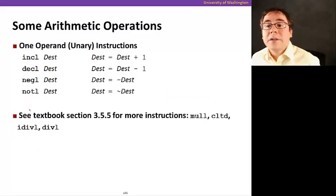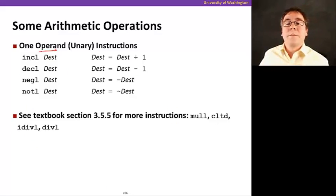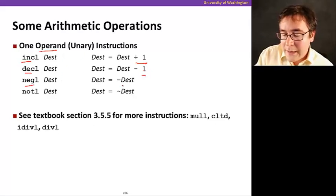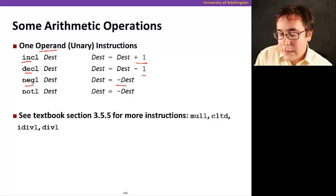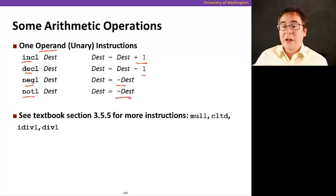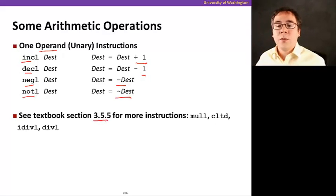Here's some other arithmetic operations. This is a unary instructions because it takes a single operand. INCL just increments by one. DECL decrements by one. And then NEGL just changes the sign bit. Just changes the sign. And NOTL just a bitwise NOT of the contents of the register. And now you should look at the textbook for more instructions, like MULL and so on, division and so on. So now let's put everything together in an example that uses LEA and some other instructions as well.